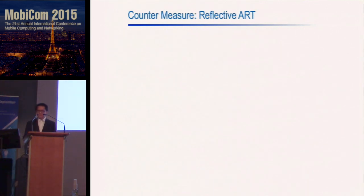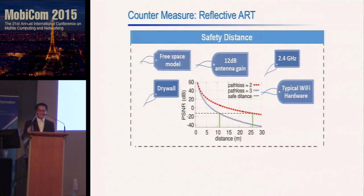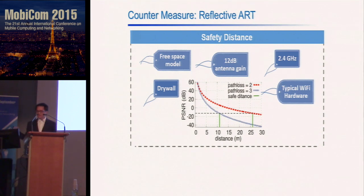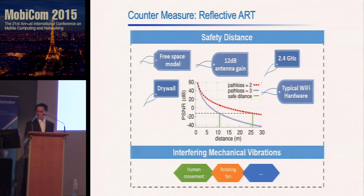The ART attack imposes a security threat to our daily life, so we propose corresponding countermeasures. For the reflective ART, we derive a safety distance from our analytical model, assuming typical indoor environments and typical wireless hardware capabilities. At higher path loss, a safety distance of 10 meters can prevent any information recovery from the eavesdropped audio. Additionally, other mechanical vibrations such as human movements and rotating fans can act as interference sources to reduce audio quality.